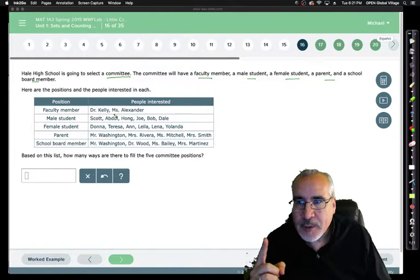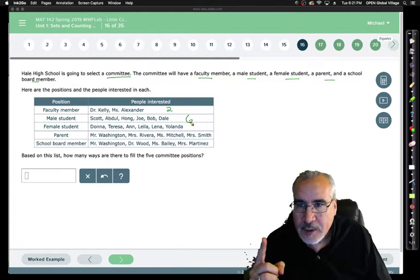So for faculty members, there are two here. For male students, there's one, two, three, four, five, six to choose from. Female students, it's one, two, three, four, five, six. And this one, there's one, two, three, four. And finally, for the school board members, there's one, two, three, and four.